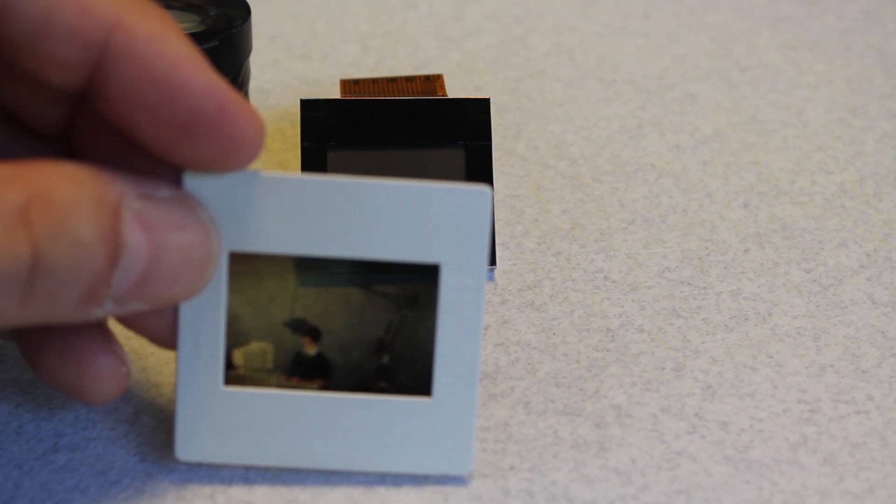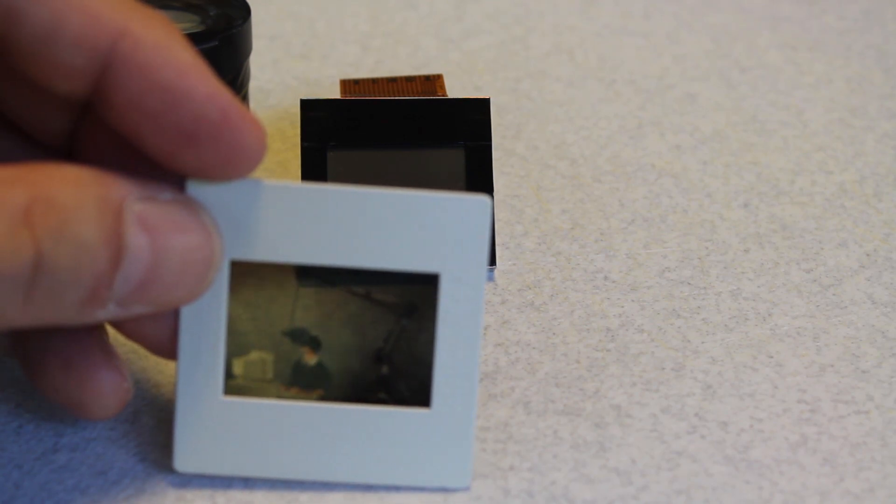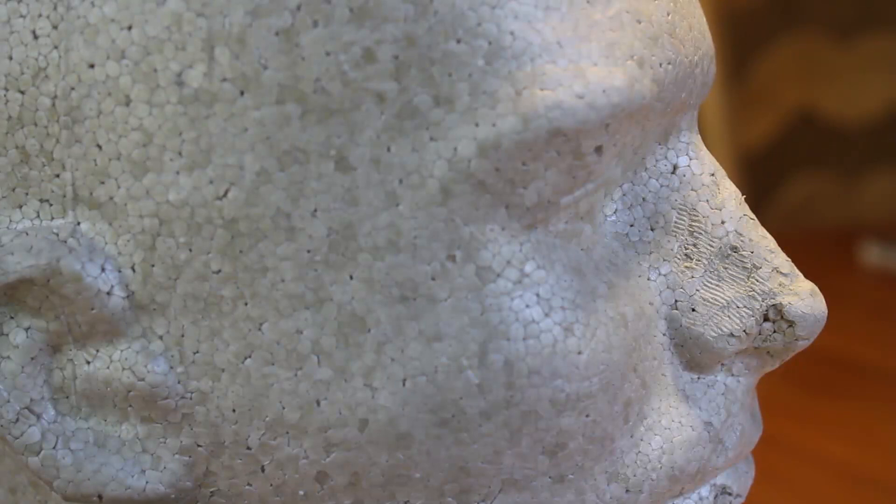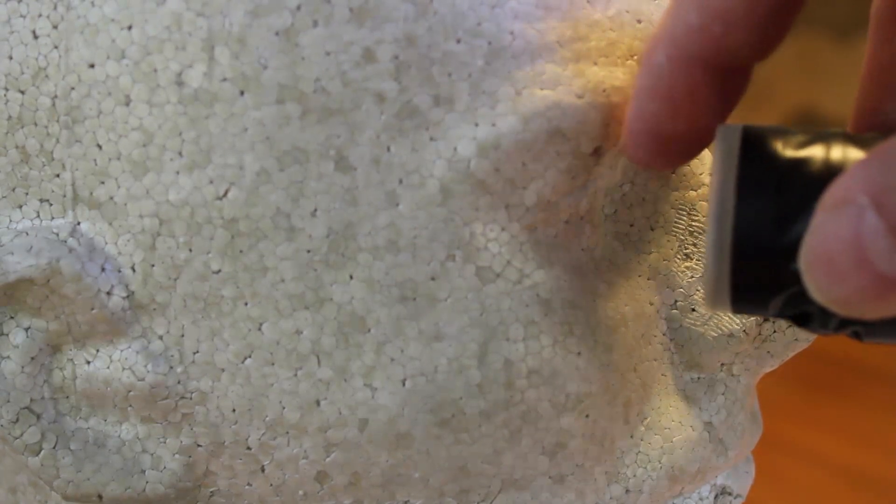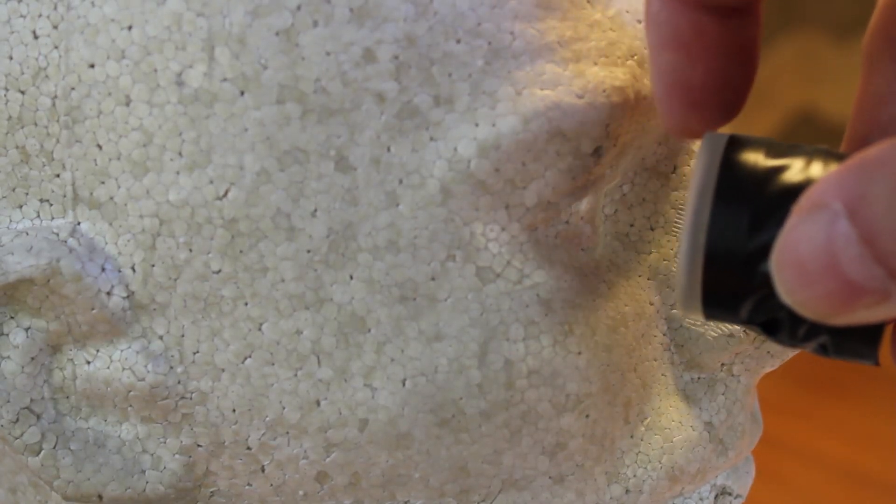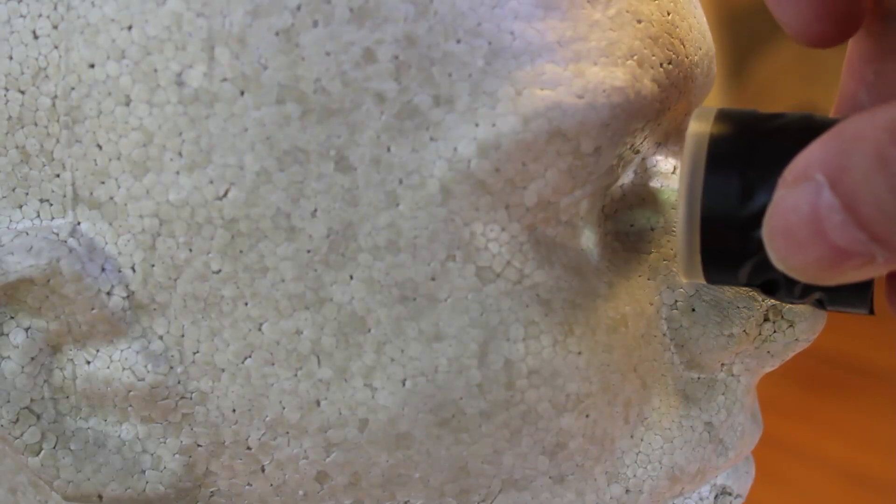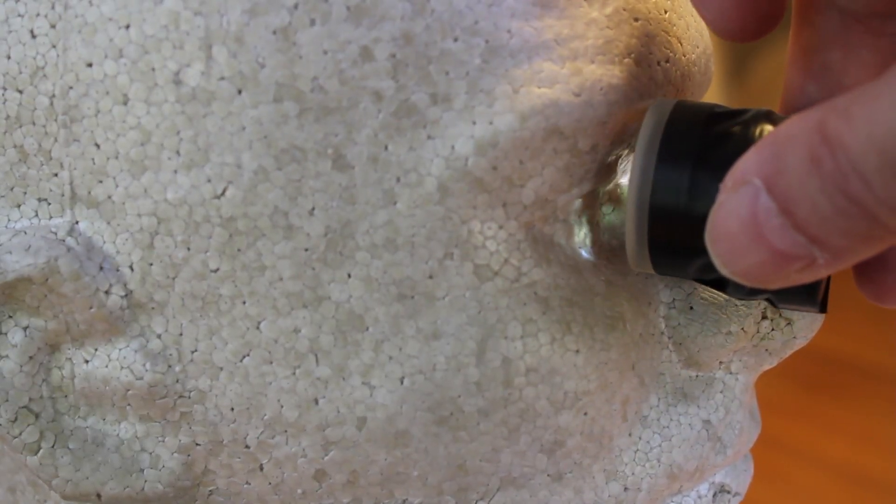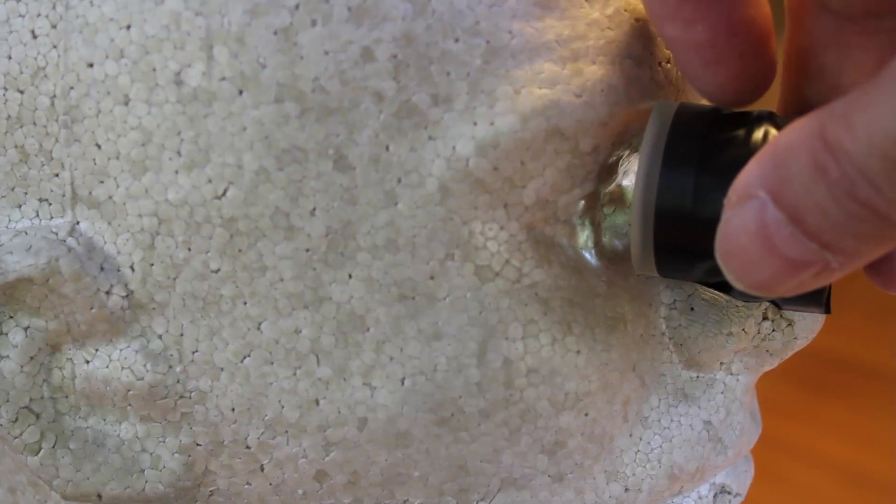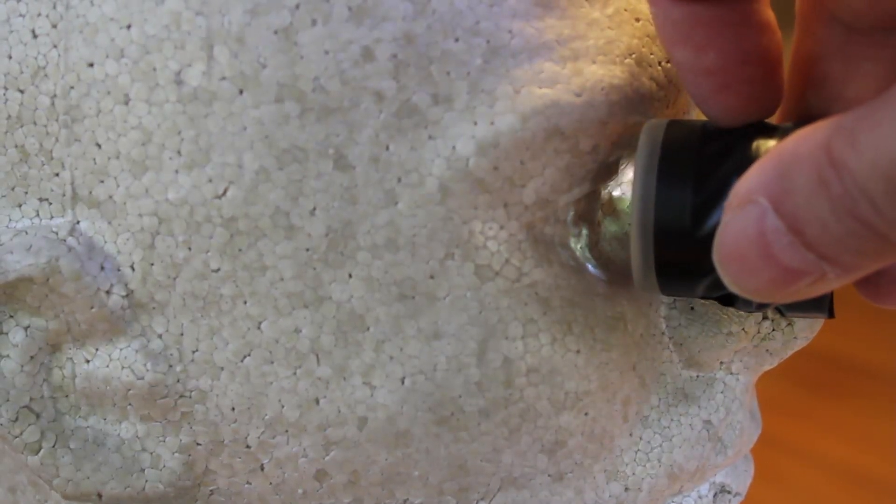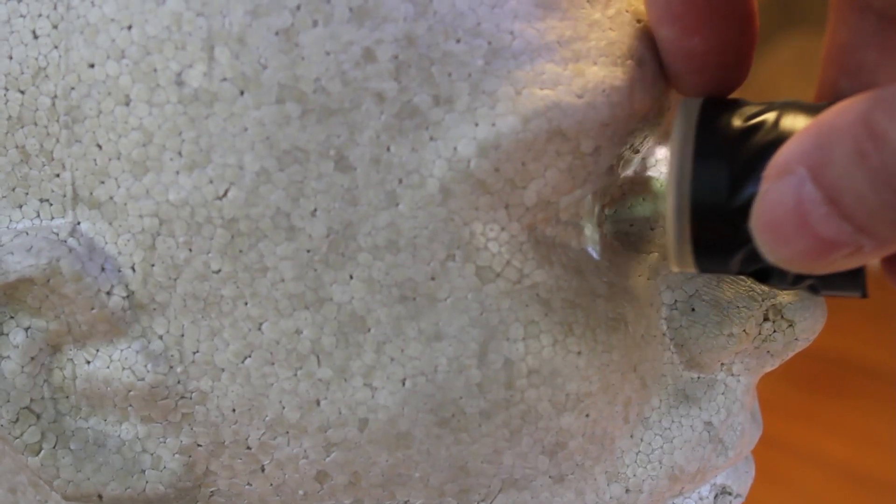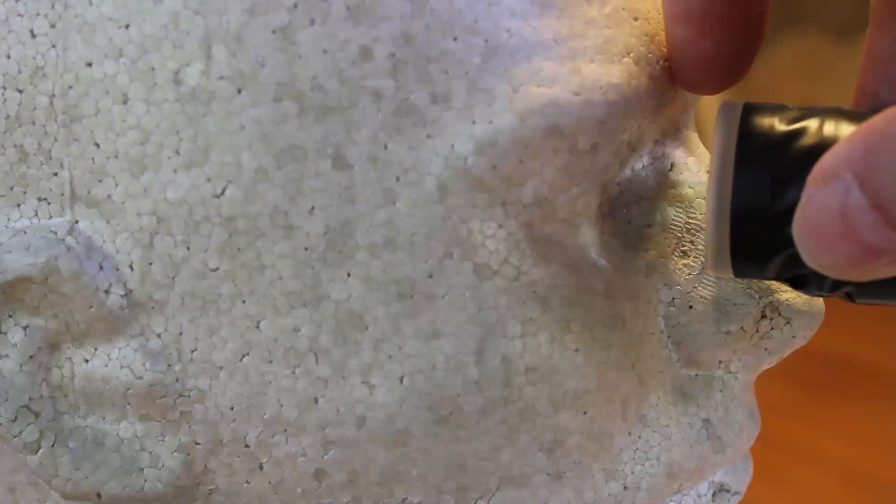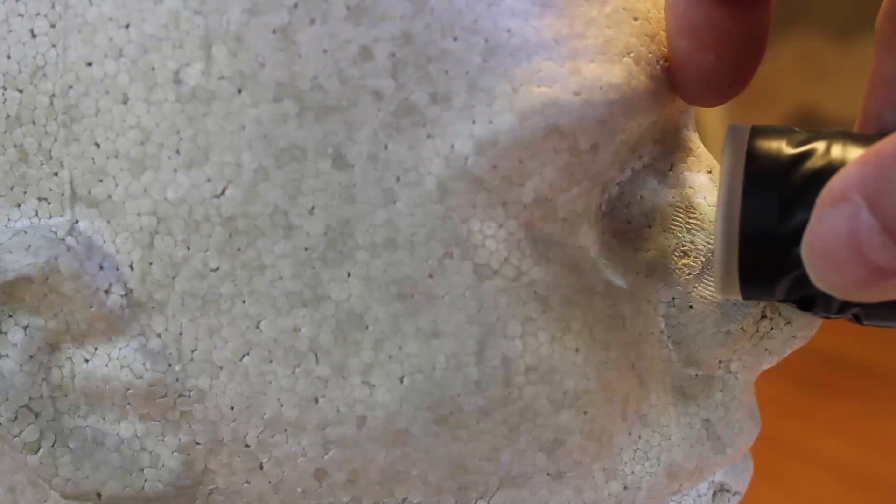They are relatively inexpensive and Surplus Shed has a wide variety. The other reason that these eyepieces are particularly useful is what's known as eye relief. And that is the distance in here between the eye and the first lens element. What we're trying to avoid is having to jam the lens directly into the eye socket, because everybody's head is a little bit different shaped. And what we'd like to do is have the eyepiece maybe about that far out.